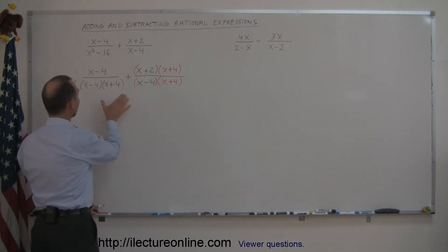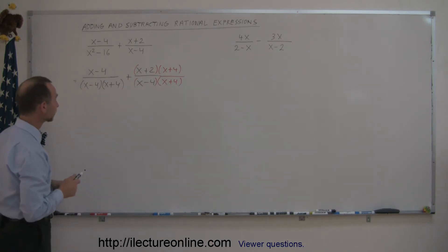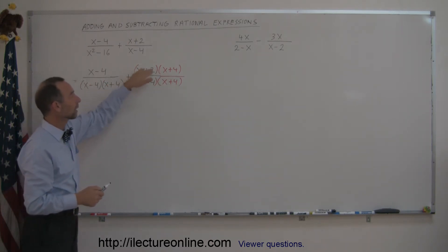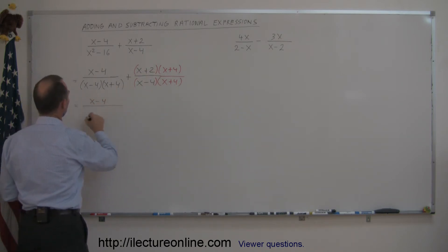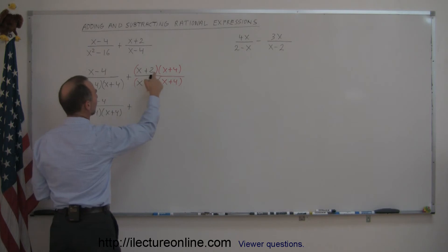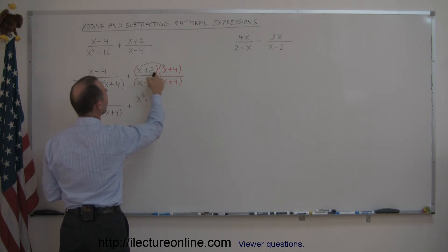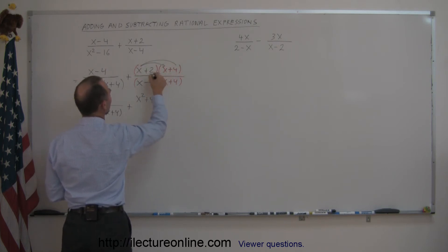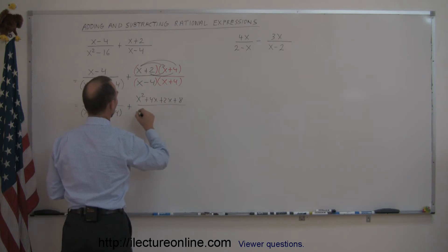Now you realize, when you look at this, that this now looks exactly the same as this denominator, so now we can go ahead and add the fractions. Before we do that, let's multiply out what we have in the numerator. This becomes x minus 4 divided by x minus 4 times x plus 4, plus — multiplying out — x times x gives us x squared, x times 4 is plus 4x, 2 times x is plus 2x, and 2 times 4 is 8, all divided by the common denominator x minus 4 times x plus 4.